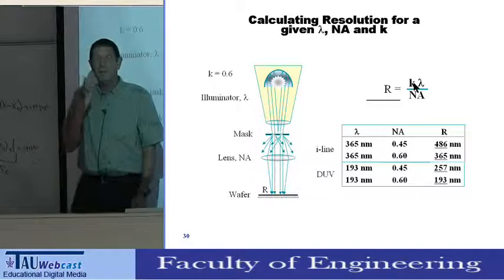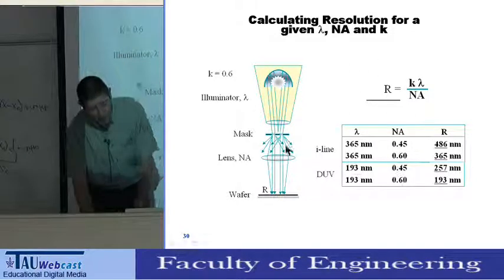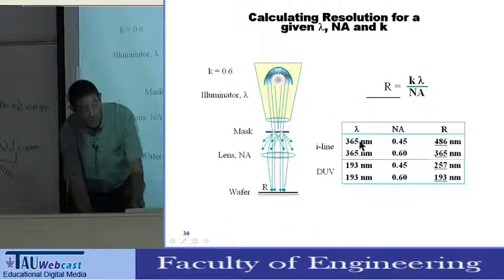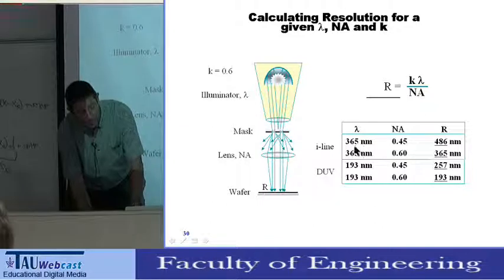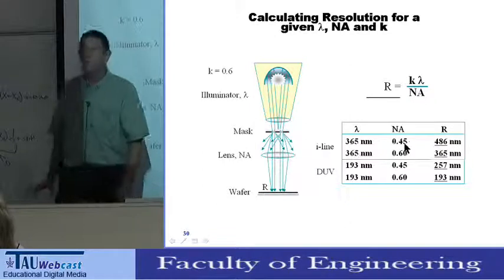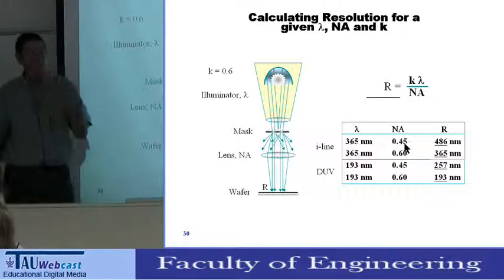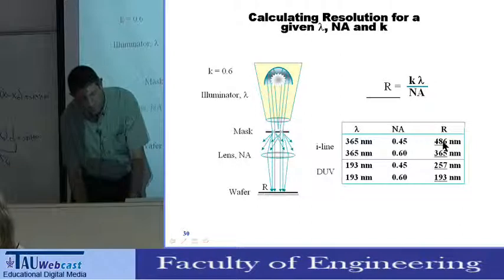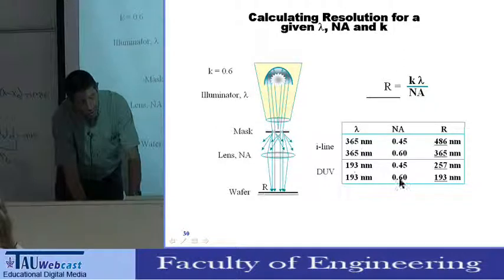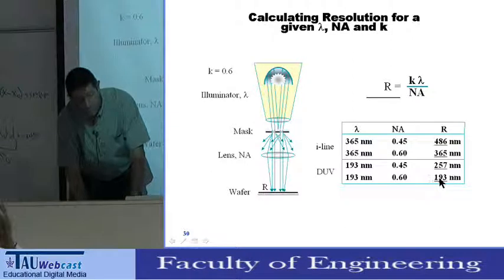k can actually be better than theory. For typical lithography, about 10 years ago people used the mercury arc lamp with a wavelength of 365 nanometers, numerical aperture of 0.45, and the resolution was about half a micron. Today people use much shorter wavelength and a much larger numerical aperture, and the resolution is 193 nanometers.